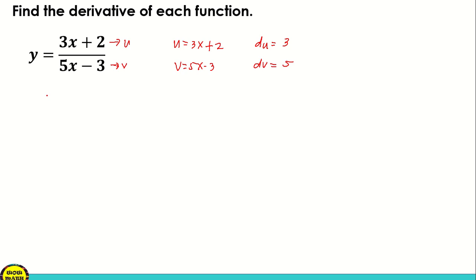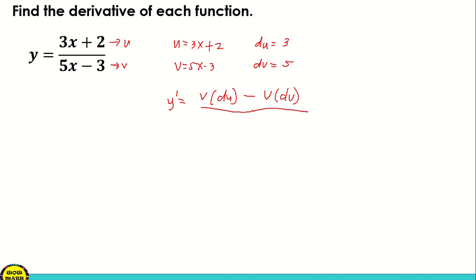And after that, we're going to apply now the formula for the quotient rule. So y prime — when we take the derivative, we use this formula: v times du minus u times dv, all over v squared.